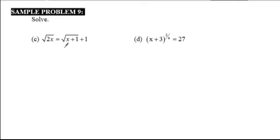In problem C, you recognize you have two radicals. The first step is to isolate one radical, which is already done, and get rid of its radical by undoing it. Undo a square root by squaring both sides.